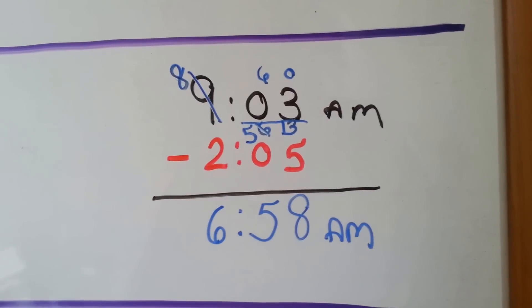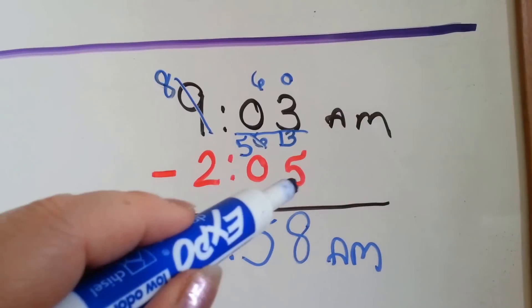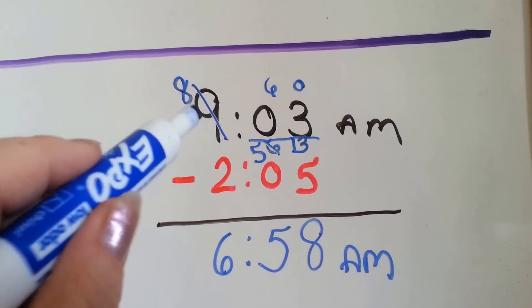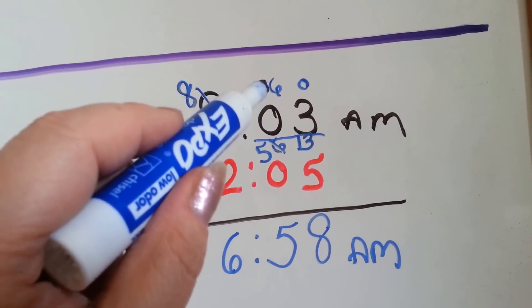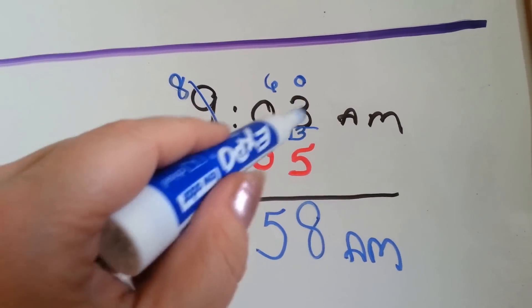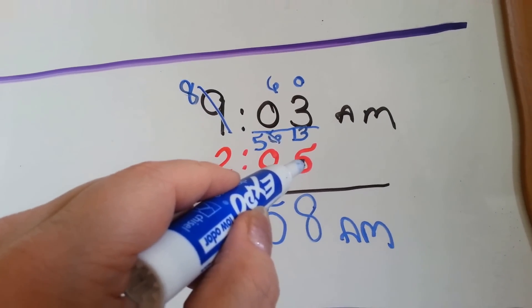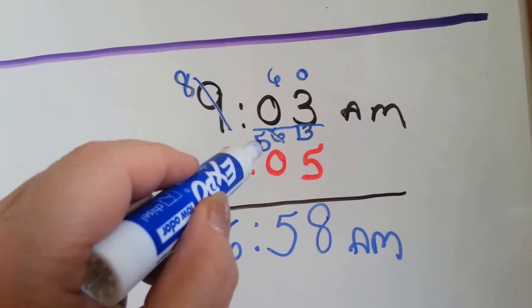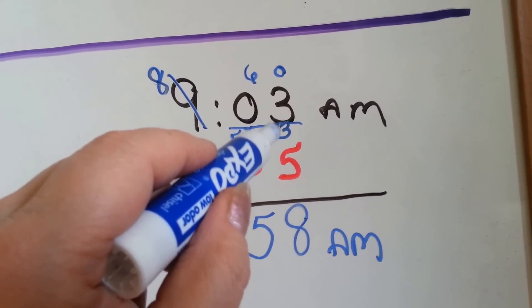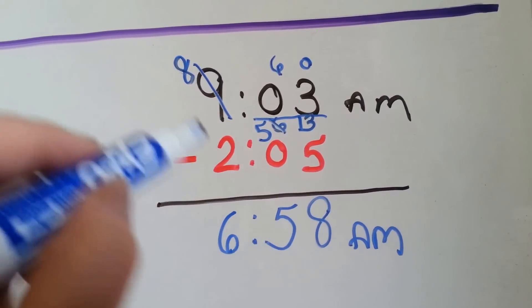Now there were a lot of steps to that, so I'm going to go over it one more time. We couldn't have 3 minutes and take 5 minutes away, so we had to borrow 60 minutes from the hour side. The 9 hours became 8 hours. We gave the 60 minutes to the minute side and added it to the 3 minutes, giving us 63 minutes. But we still couldn't have 3 and take 5 minutes away. So we borrowed from the 60-minute side — it became a 5, we gave a group of 10 to the 3 and it became a 13. 13 take away 5 is 8. 5 take away none is 5. And 8 take away 2 is 6.